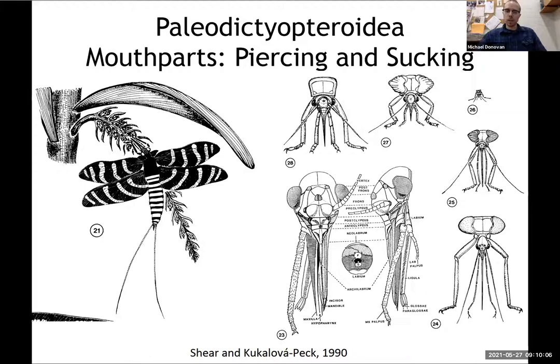This herbivory was probably made by a Palaeodictyopteran insect. They had these long mouthparts, and there's a lot of variation depending on the particular family. There were many with smaller piercing and sucking mouthparts that matched the overall shape and size of this damage.